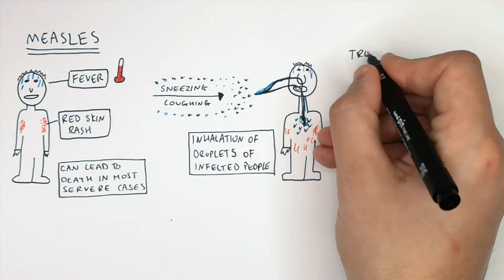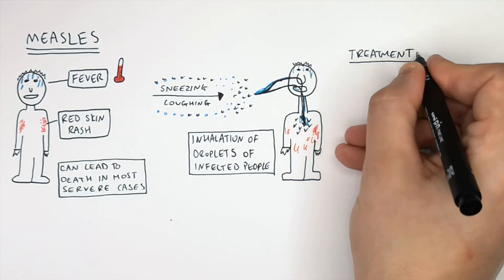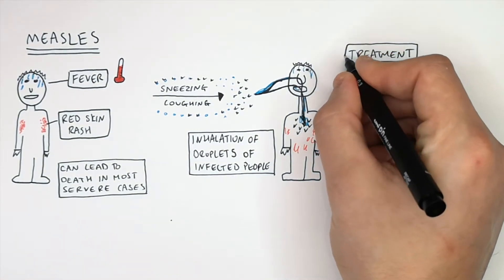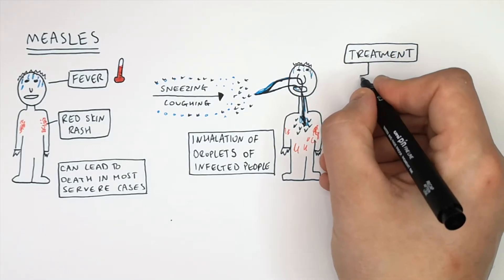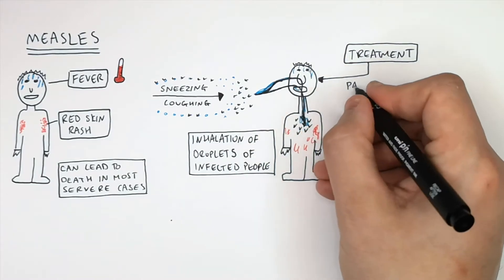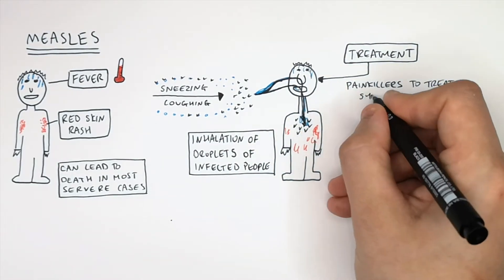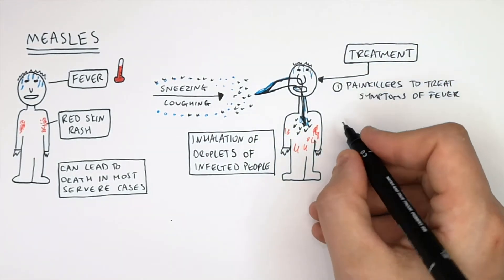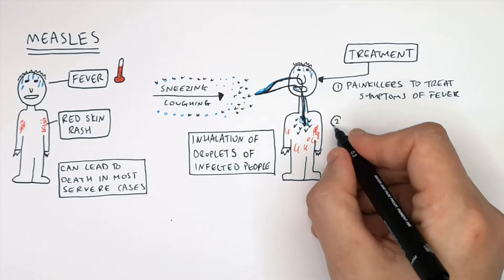So treatment. Antibiotics will not cure you of measles. This is because measles is a viral infection and antibiotics will only cure bacterial infections. Painkillers can be taken to treat the symptoms of the fever, to reduce the effects of the fever itself.